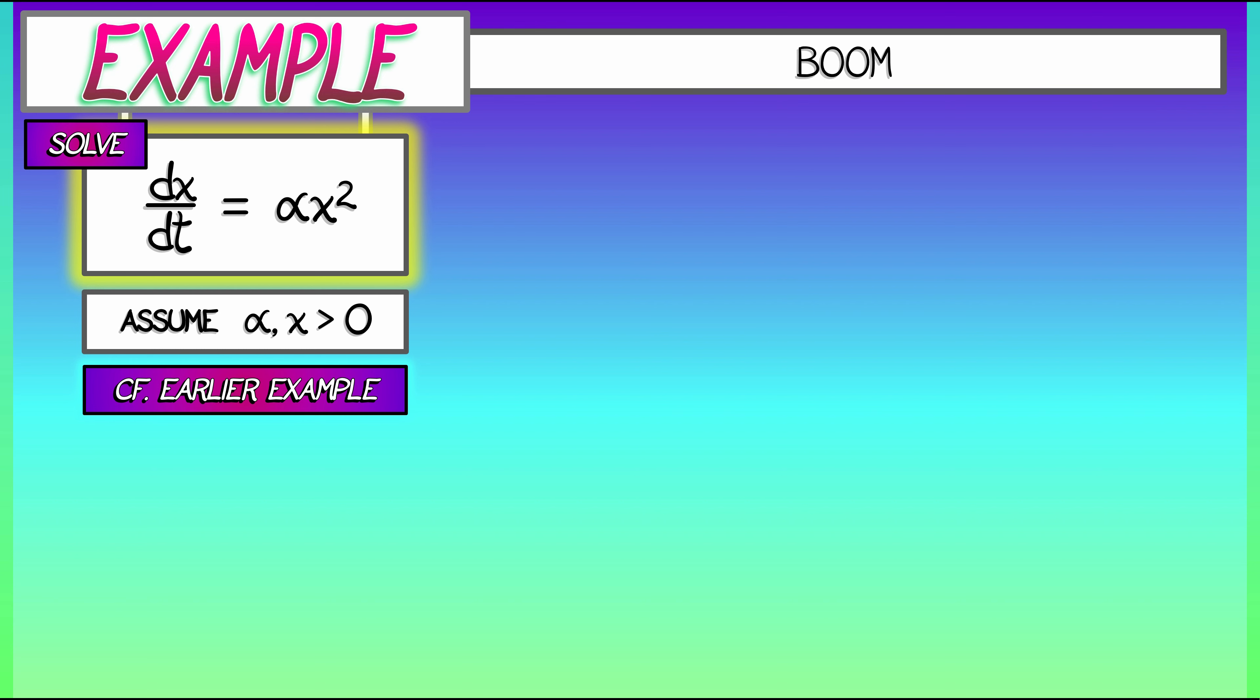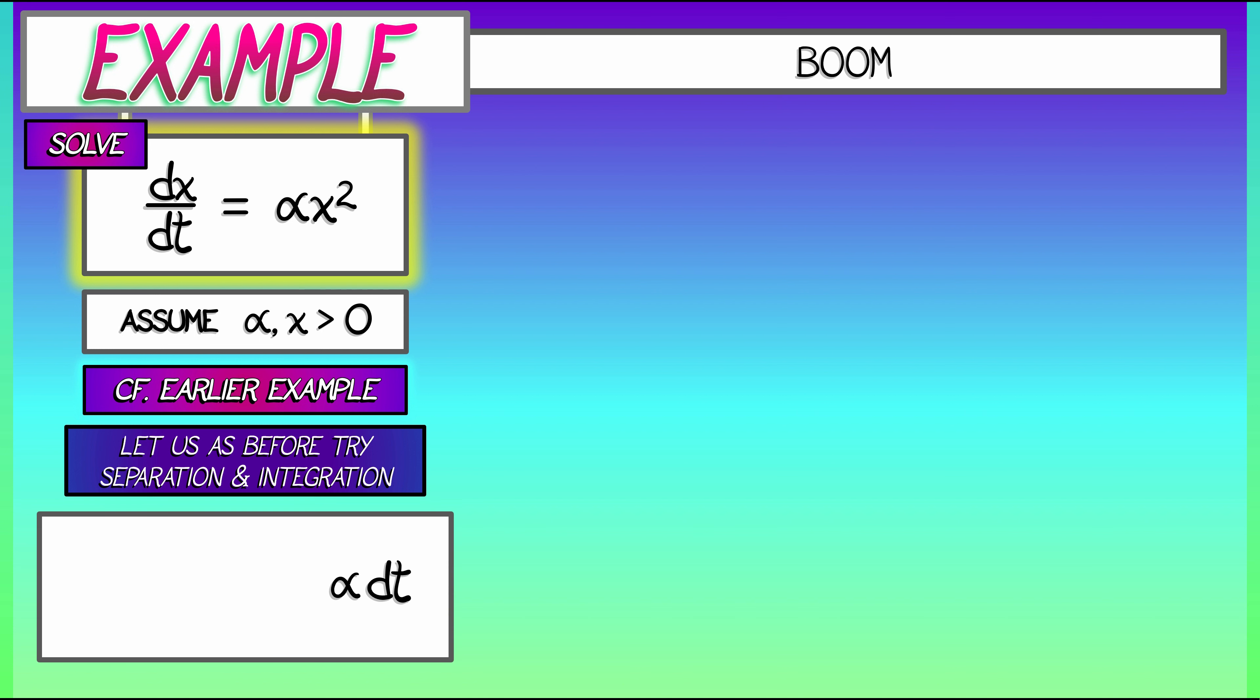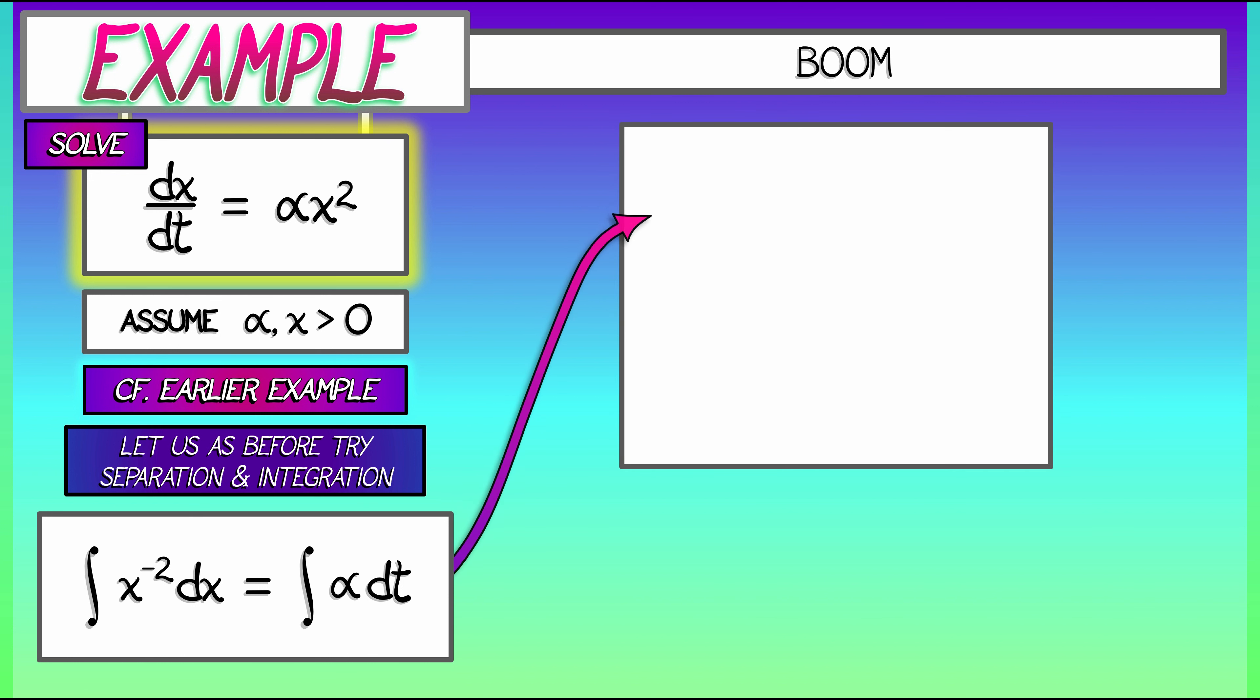But let's do what we did before. This is a separable differential equation. We could separate and integrate. Multiply through by dt. On the right, we have alpha times dt. On the left, after dividing through by x squared, we've got x to the minus 2 dx. Integrate both sides. This is not going to be a problem at all.